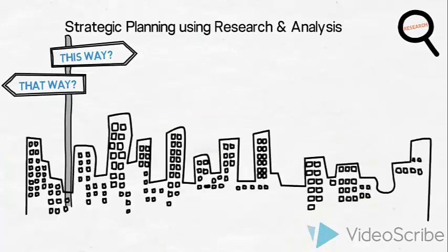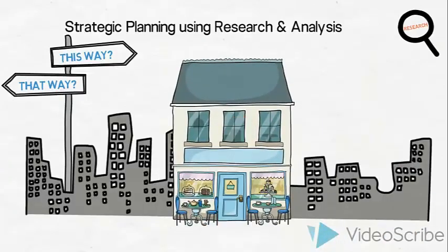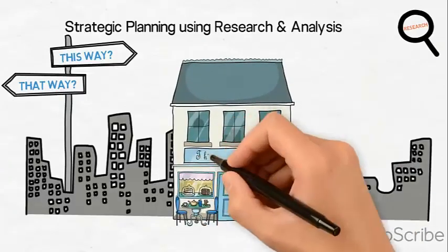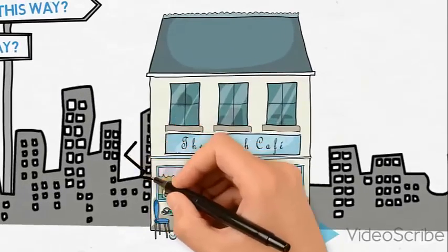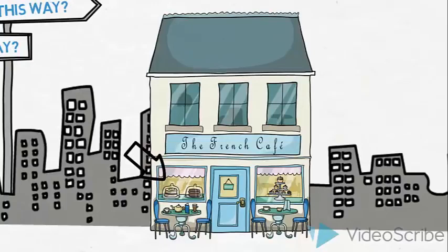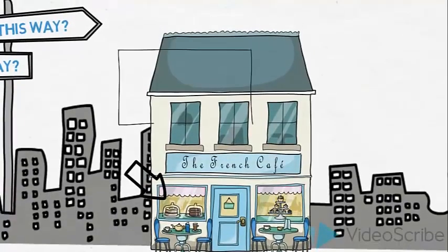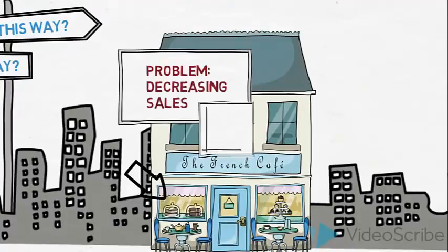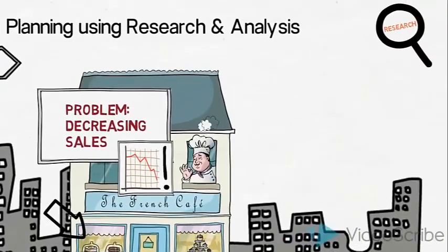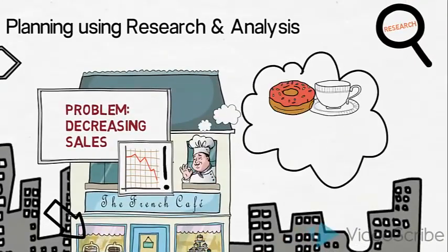Let us use an example. This café is located in a large city close to a busy high street. It is called the French Café, and it specializes in serving high quality cakes and desserts. The French Café is troubled by the fact that fewer and fewer customers visit the café, and sales are decreasing as a result. The owner would like to find out why customers are looking elsewhere for their cakes and coffee, to help him decide what to do to turn things around.